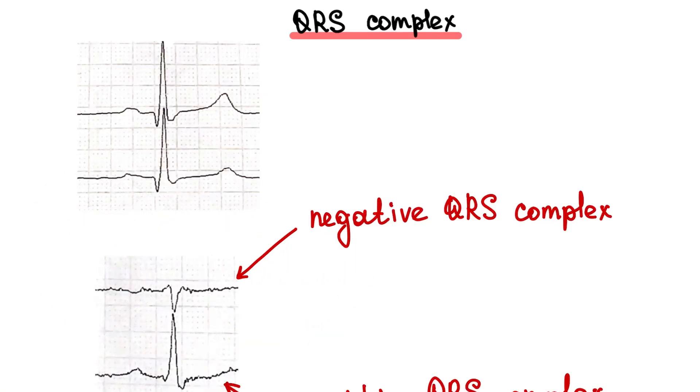Number 1: QRS complex. The QRS complex consists of 3 waves. Q, the first negative wave before the R wave. R, any positive wave of the QRS complex.